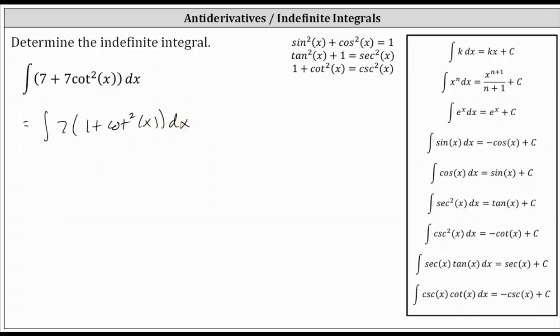In this form, we should be able to recognize we can perform a substitution for one plus cotangent squared x using the Pythagorean identity, one plus cotangent squared x equals cosecant squared x.